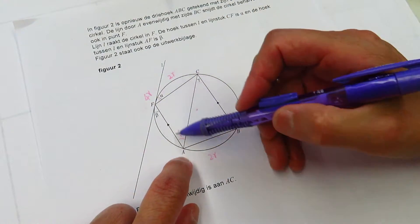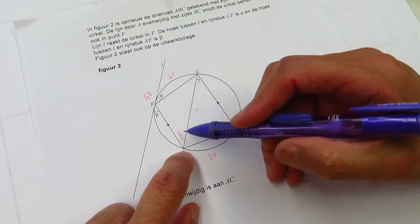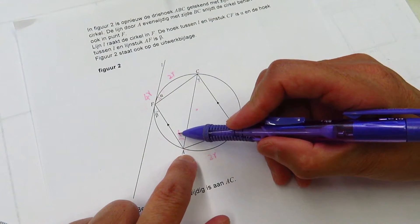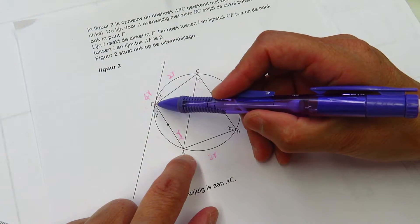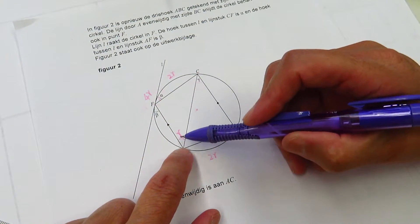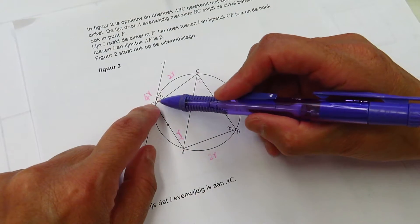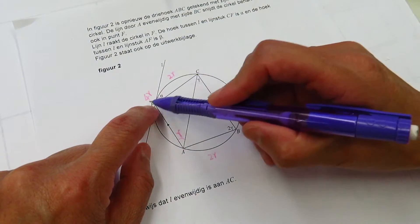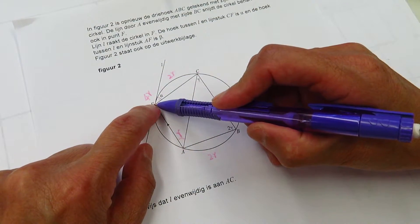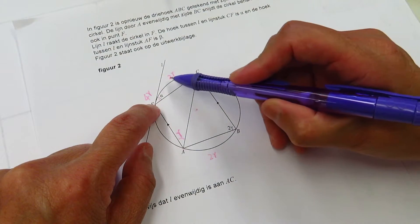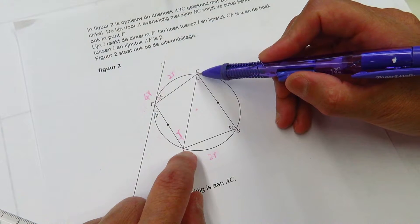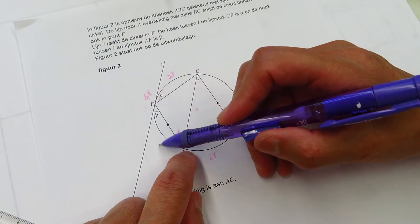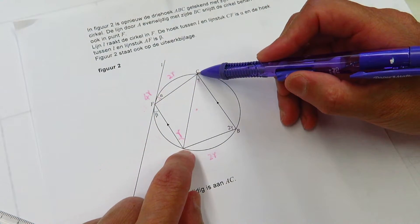If the angle of FAC is 1 gamma, I'm sorry if I made any mistake. If the angle FAC is 1 gamma, then the measure of FC, the arc is 2 gamma. Okay, we know here all together is 4 gamma.